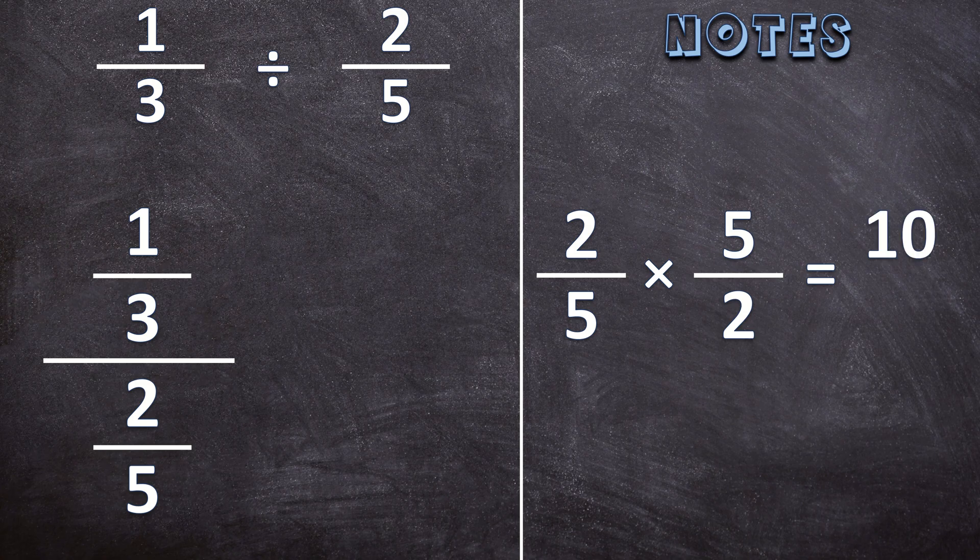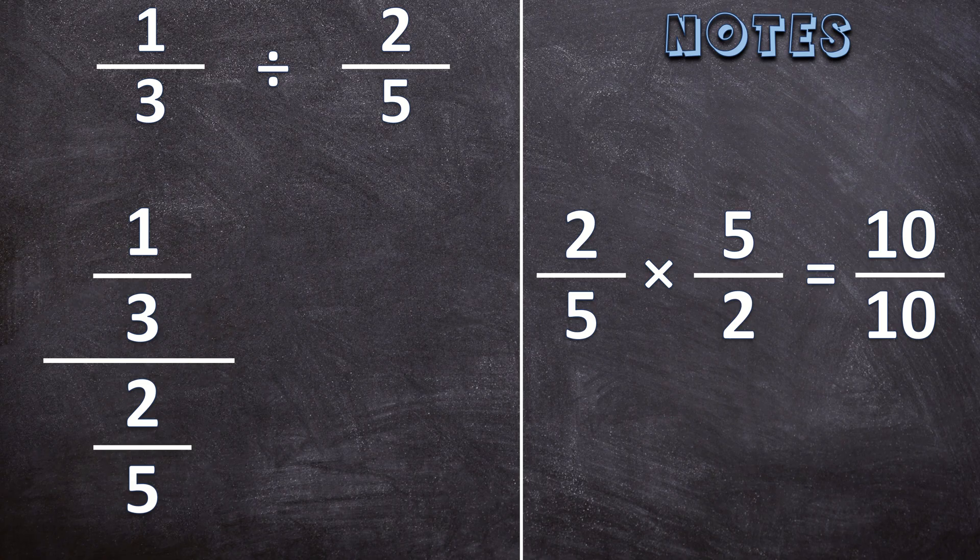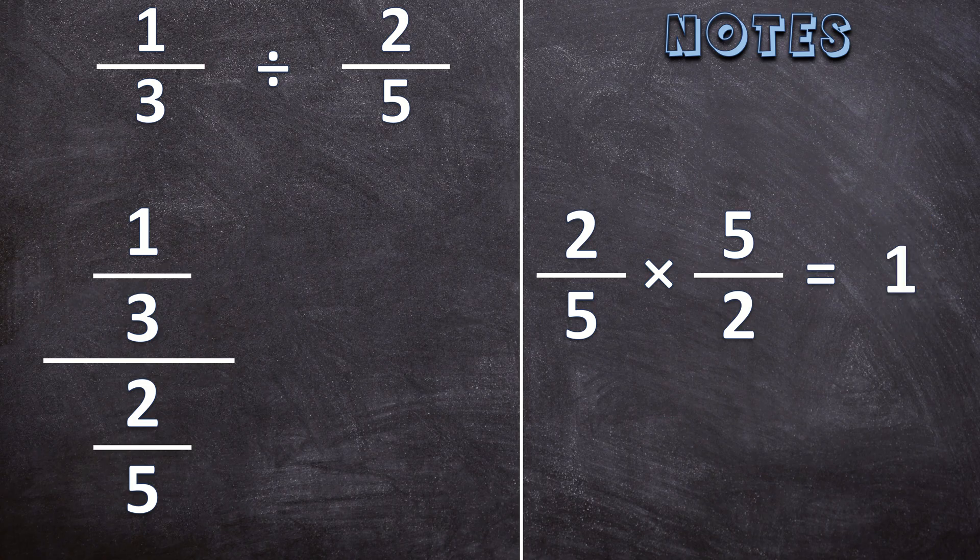So 2 times 5 is 10 over 5 times 2 is also 10. And what do we know when we have exactly the same numerator and denominator? We know that will be equal to 1. 10 divided by 10. If I have 10 apples, I divide it into 10 people, everyone will have one whole apple. And that's why we multiplied with its reciprocal.